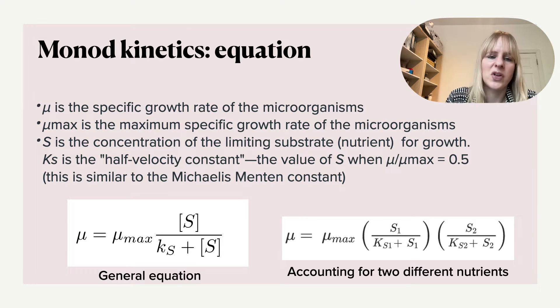a kind of factor which is a half velocity constant. And this is the value of when you look at the substrate concentration when this is about half of mu divided over mu max. Now the mu stands for the specific growth of the microorganisms and then we look at there is a maximum growth rate